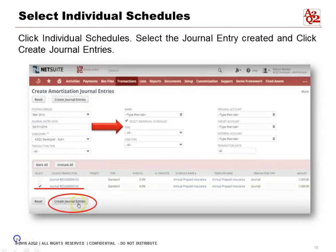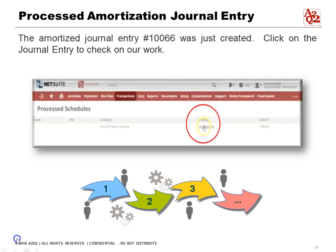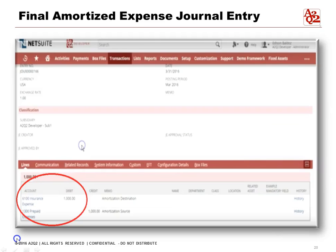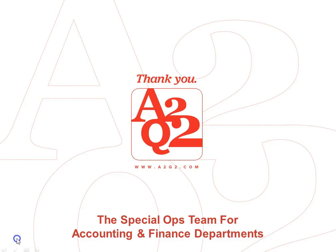You can drill into the individual journal entries to make sure it's amortizing the way you expect. Click into the individual schedules, select the journal entry created, and click into it. You'll see the journal entry that was automatically processed — in this case, entry 100066. The amount amortized is $1,000, which is what we wanted. You can verify the expense is going to Insurance Expense and the prepaid is being taken from account 1300. That's how we create journal entries for amortizing monthly, quarterly, or annual expenses.